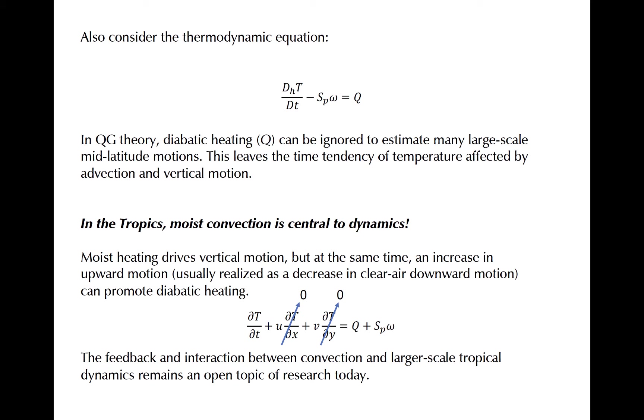Next we'll consider the thermodynamic equation. Diabatic heating is absolutely crucial to tropical dynamics. For many first order approximations of QG theory, diabatic heating can be neglected, although it does become important when considering how the vertical gradient of heating affects the evolution of geopotential, and when considering ageostrophic motion such as along a front. When removing diabatic heating in QG theory, we are left in the thermodynamic equation with a balance between the Eulerian temperature tendency and 3D advection.